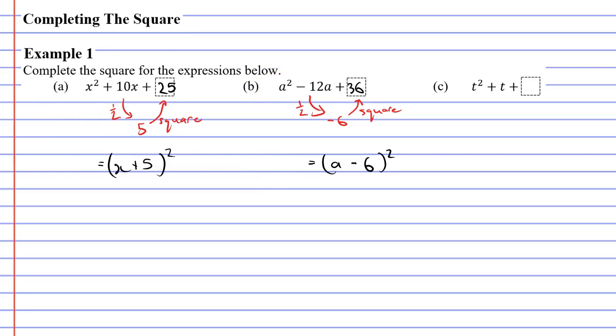Now, moving on to question C. We want to start by halving the number to the left of the T. Now, there's no number there at the moment, which means there's technically a 1. What's half of 1? Well, it's 1 half. Next, we need to square our half. What's 1 half times 1 half? Well, it's 1 quarter. Now that we've completed the square, we would like to write it down in its factorized form. Now, this time we have T. So, our first term will be T. And when we halved the 1, we got 1 half. So, it's going to be T plus 1 half all squared.